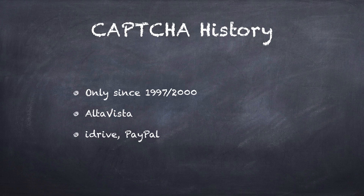The history is kind of interesting — it's not as old as you think. It's only been around since around 1997 to 2000. According to Wikipedia, in 1997 AltaVista, the search engine before Google, had a submission form for adding a new website to their search engine and it had a CAPTCHA in it. Around 2000, iDrive also had a CAPTCHA, and probably the biggest entry that really got people seeing this all the time was PayPal, which around 2000 had a CAPTCHA for their login.